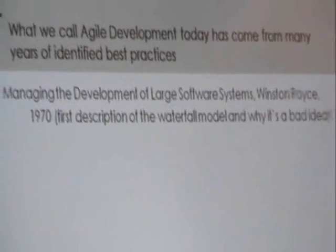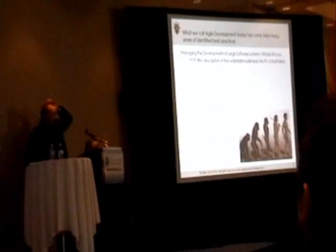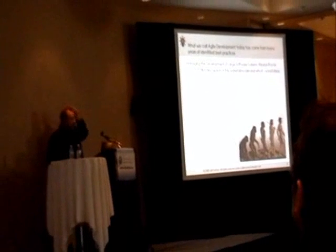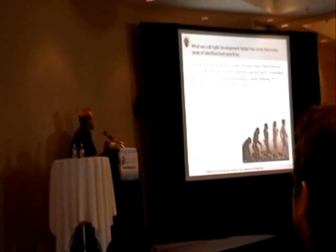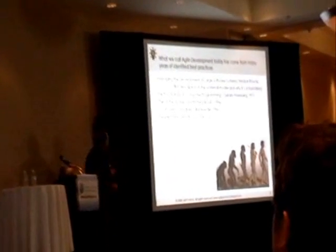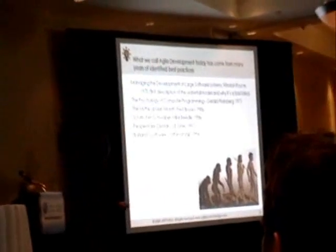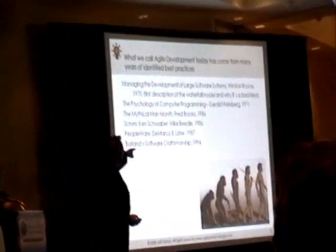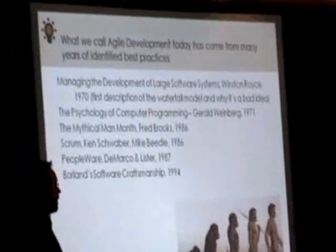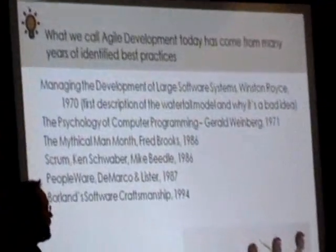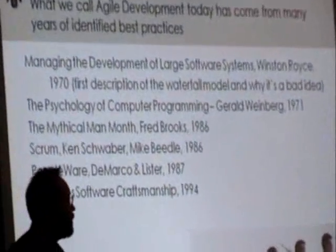One of Winston Royce's greatest frustrations is that he got credit for inventing the waterfall model. But ever since punch cards, people have known this has been a bad idea. If we keep going up the stack, we eventually find Scrum being first tested and tried out in 1986. Scrum is now commonly identified as an agile process.